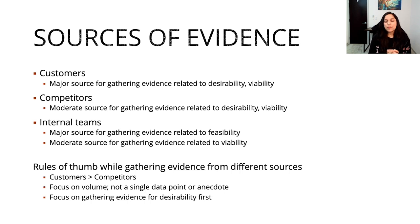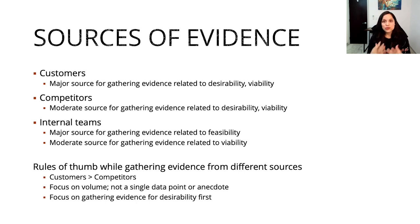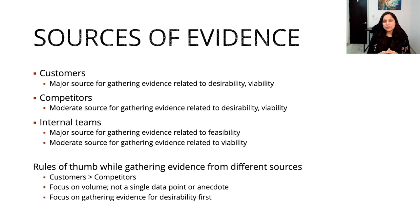Competitors are a moderate source of gathering evidence related to desirability and viability. Whether customers have a particular pain point is something that only customers can tell you for sure. Competitors will give you a good idea about where competitors are headed, but don't just follow something your competitors are doing if you don't have the evidence for it from your customers. For viability, you can look at competitors and talk to internal teams such as legal, sales, and marketing to determine price points, expected costs, revenue, and other viability-related factors.